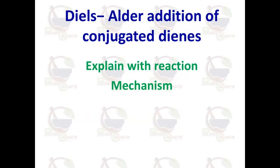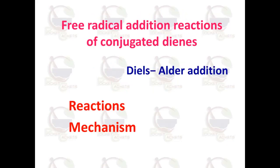Another important topic is the Diels-Alder addition reaction of conjugated dienes. This can be asked as both a 2-mark and a 5-mark question. For a 2-mark question, define what the Diels-Alder addition is and express it without a detailed mechanism. For a 5-mark question, include the full mechanism. Free radical addition of conjugated dienes and the Diels-Alder reaction should both be included.